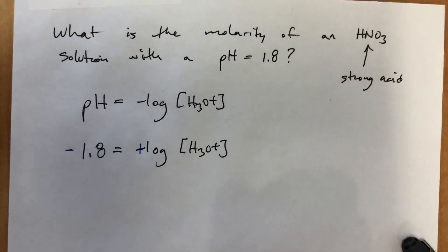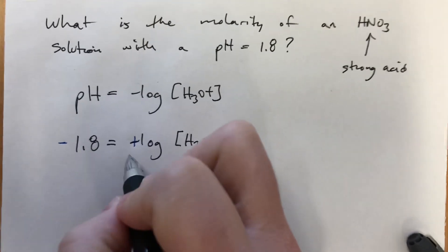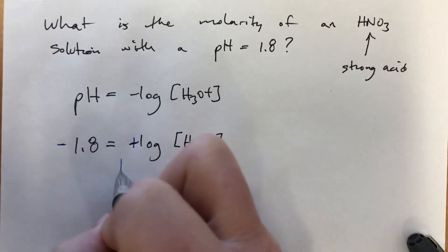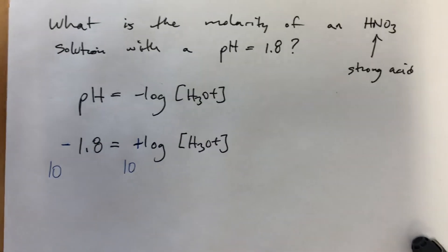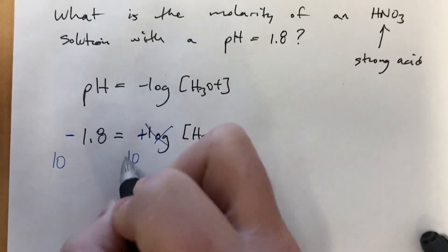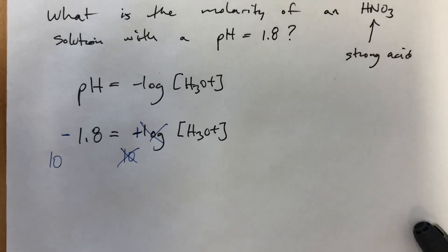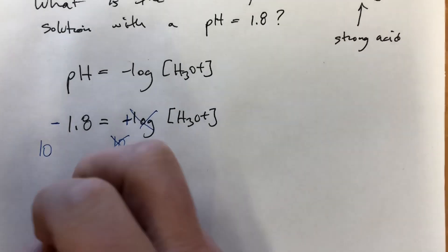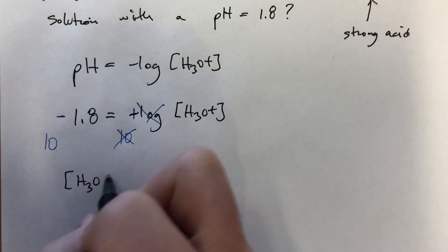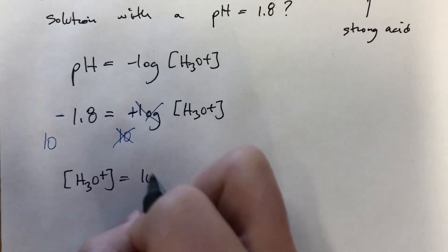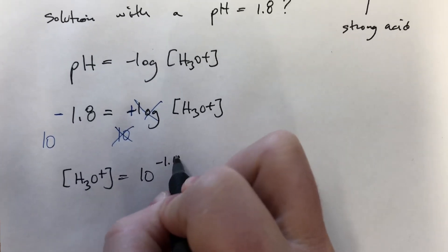And then to get rid of this logarithm, we've seen natural logs before, but for regular logs, it's log base 10. So it's 10 to the whatever on both sides. This will go away. And basically, our concentration of H3O+ will be equal to 10 to the negative 1.8.